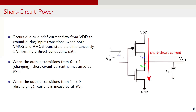Once the current values are obtained, in theory power can be calculated as V times I. However, this calculation is not precise for short circuit power because the transistors' drain-to-source voltages are not constant during transitions.